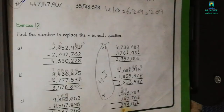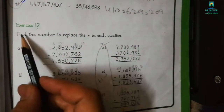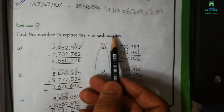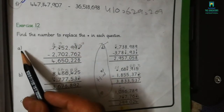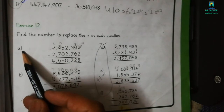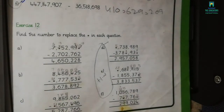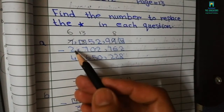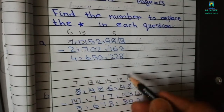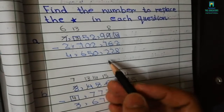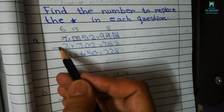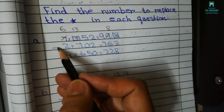Here is Exercise 12: find the number to replace the blank in each question. The first question is Part A. In Part A, some values are missing and as we can see, the sign of subtraction is used here.